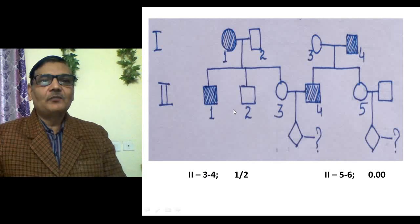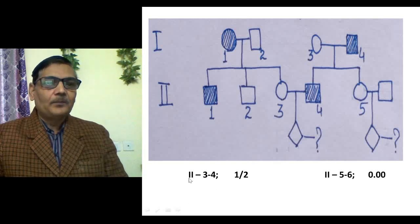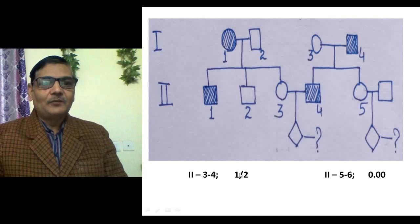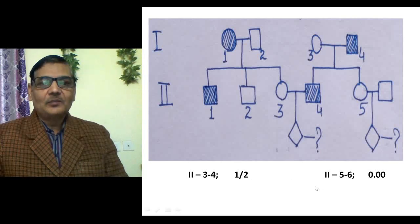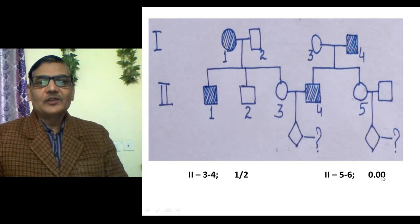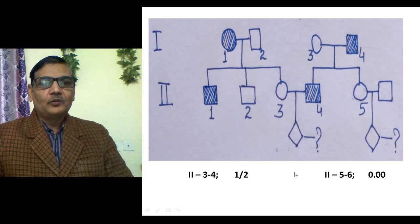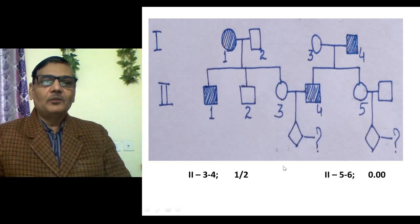If individuals five and six get married, they will have a completely normal child. The same pedigree confirms: if persons three and four get married, there is a 50 percent chance of inheriting the trait or disease to the next generation, and if five and six get married, their children will not show the disease at all. As stated, the calculation pattern for autosomal dominant cases is very straightforward and can be easily done.